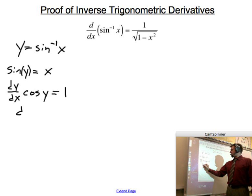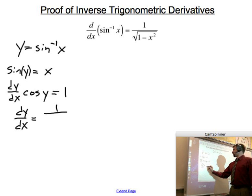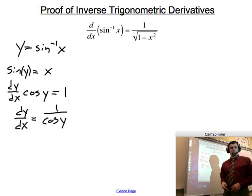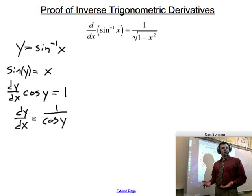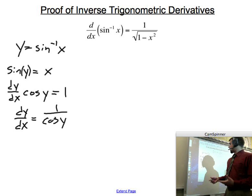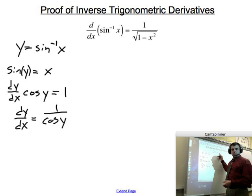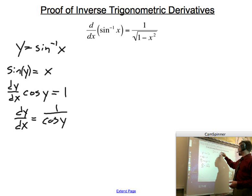So that's where we start, and we can solve for dy dx pretty nicely, where you get one over cosine of y. That's pretty nice. You've got dy dx solved for, but we want to do a little bit better. We want to actually get it to look like how we started it, with the one over the square root of one minus x squared.